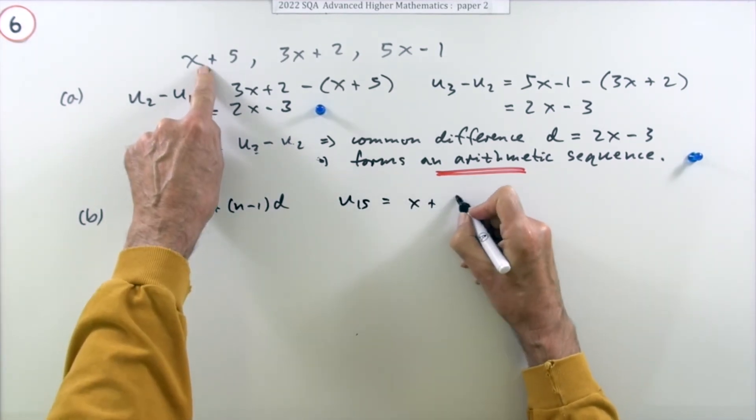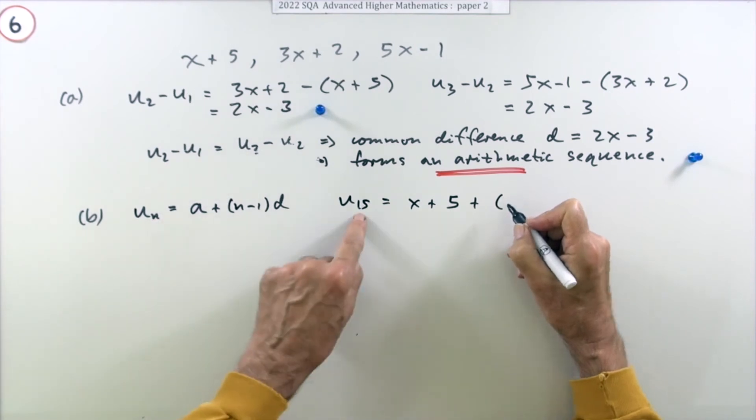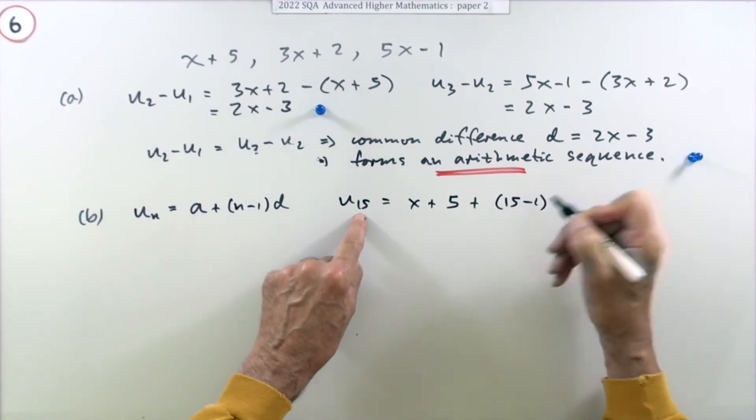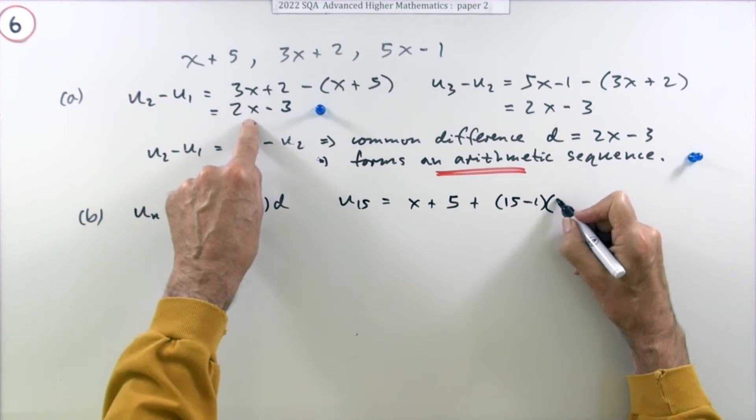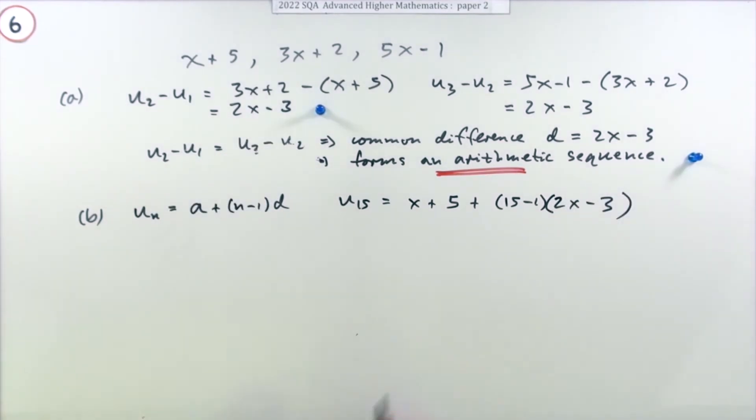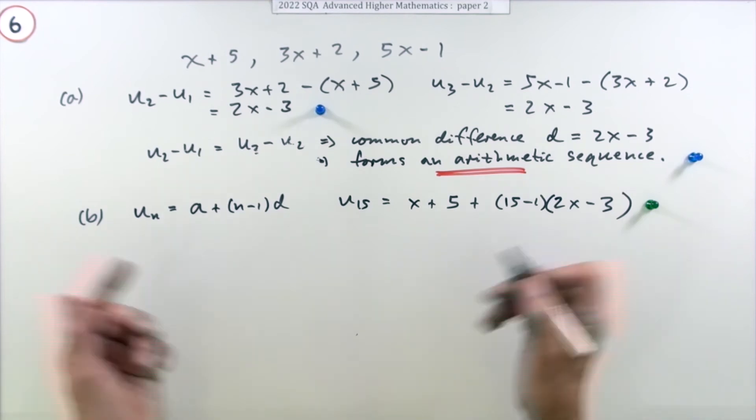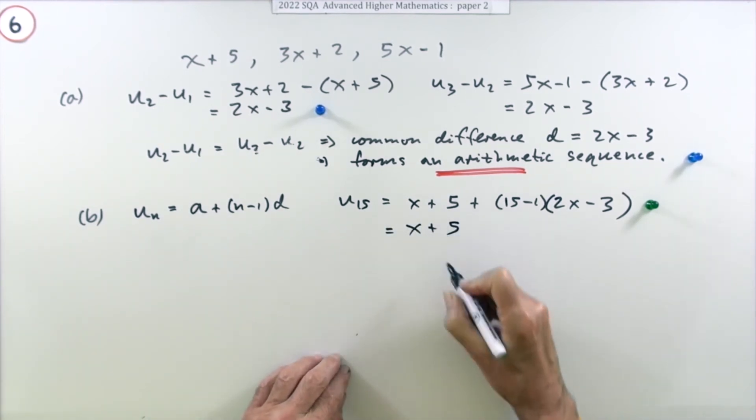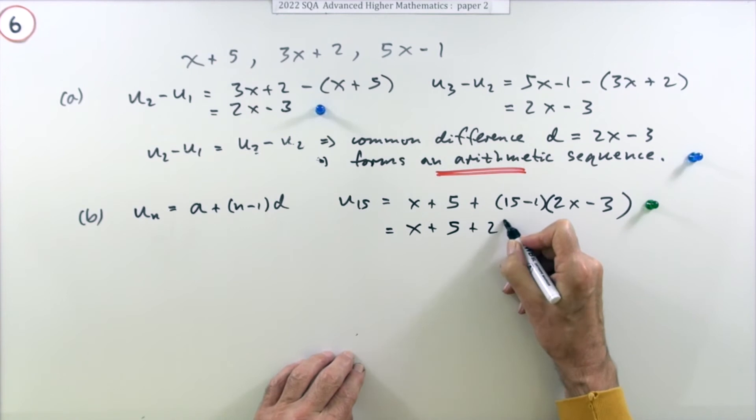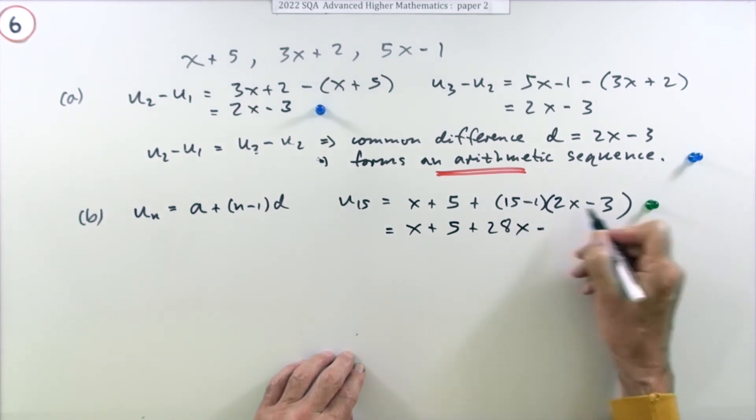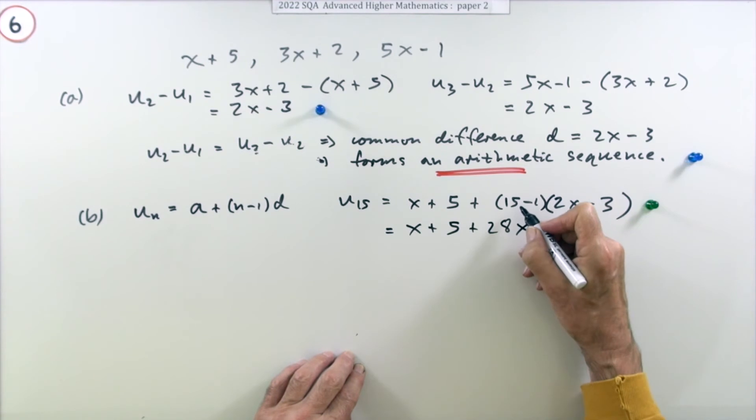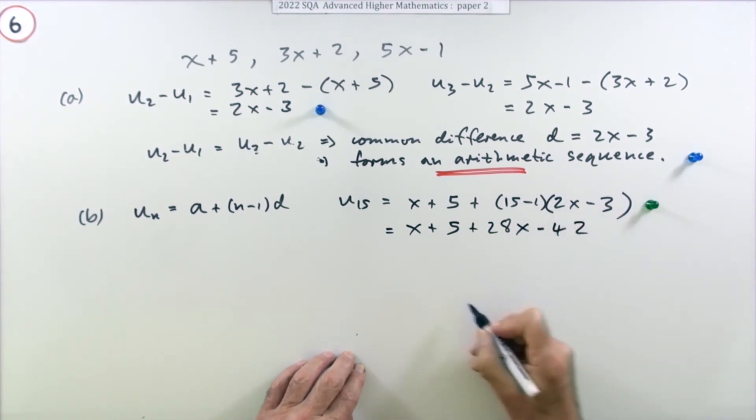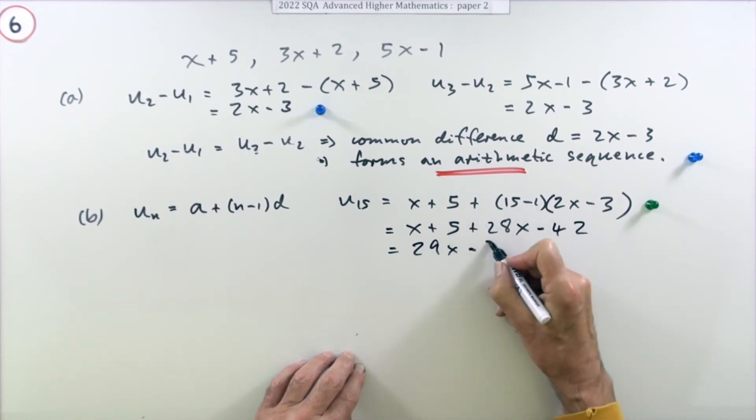Doing that gets the first mark, just for remembering that that's what you do and putting the numbers in. Now tidy up for the last mark. So that's x plus 5, and that's 14, so it'll be 28x minus - and then three times 14 will be 42. So what's that? 29x minus 37.